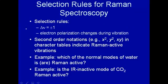Selection rules for Raman are exactly the same as for infrared absorption spectroscopy: the change in quantum number has to be plus or minus one. There is also a gross selection rule — remember for infrared spectroscopy the vibrations had to give rise to an oscillating dipole moment. For Raman, the corresponding gross selection rule is that electron polarization has to change during a vibration, meaning the way the electrons move in the electric field has to change when you have a vibration.